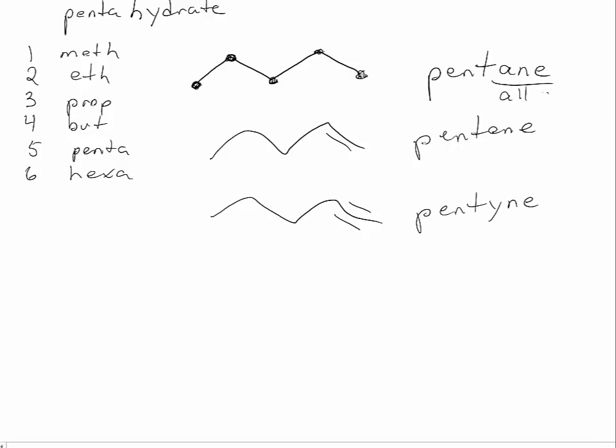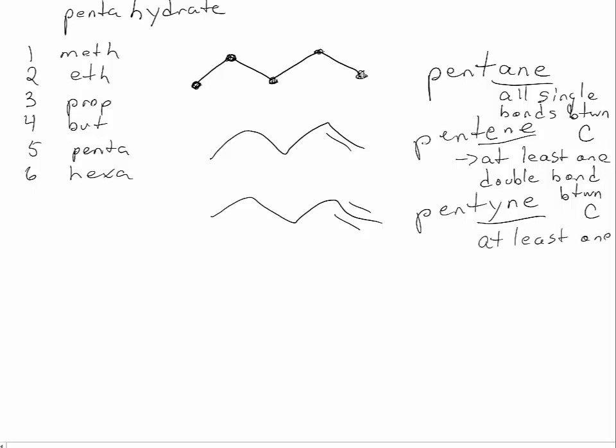So -ane means all single bonds between carbons. Pentene means that there's at least one double bond. And pentyne means that there's at least one triple bond between carbons.